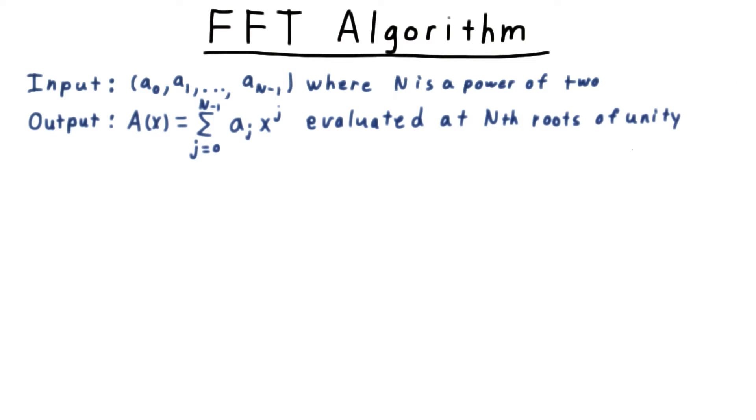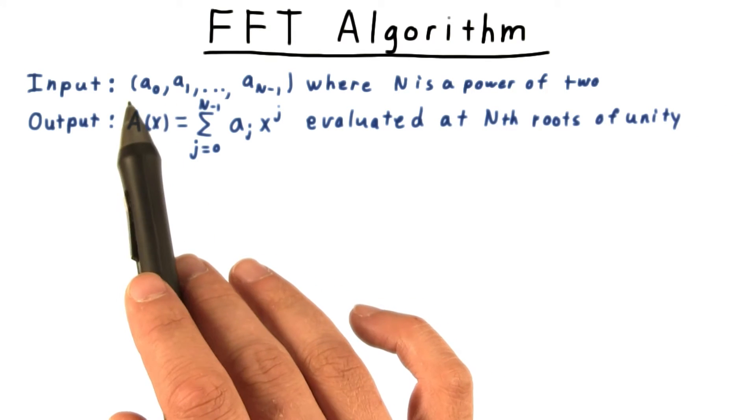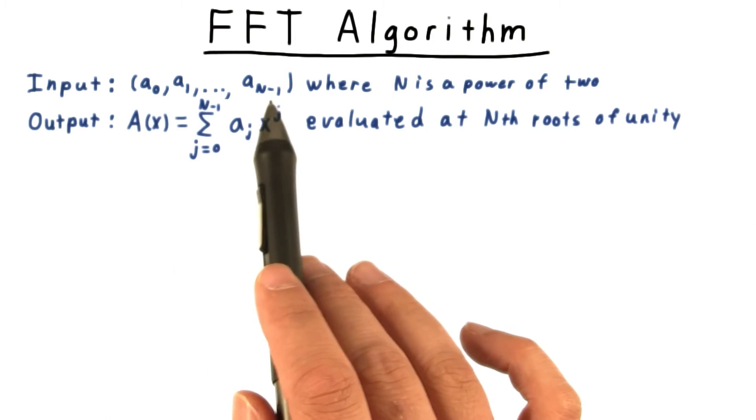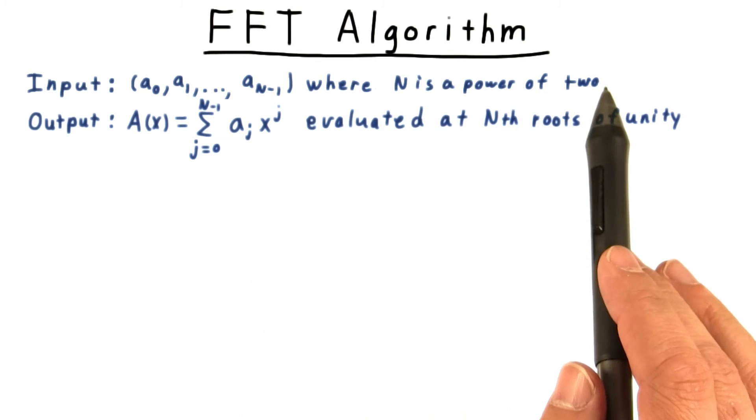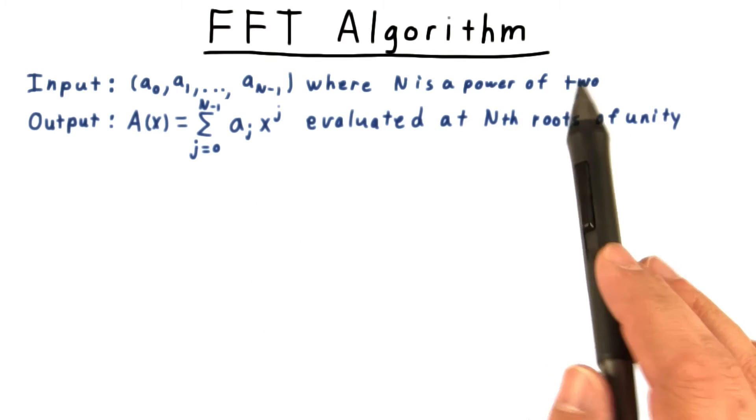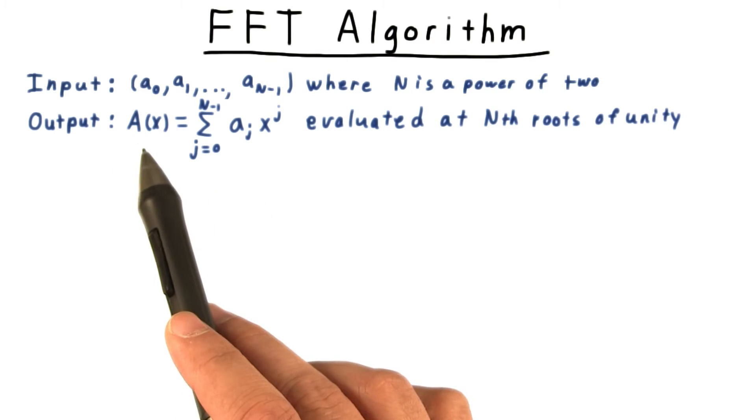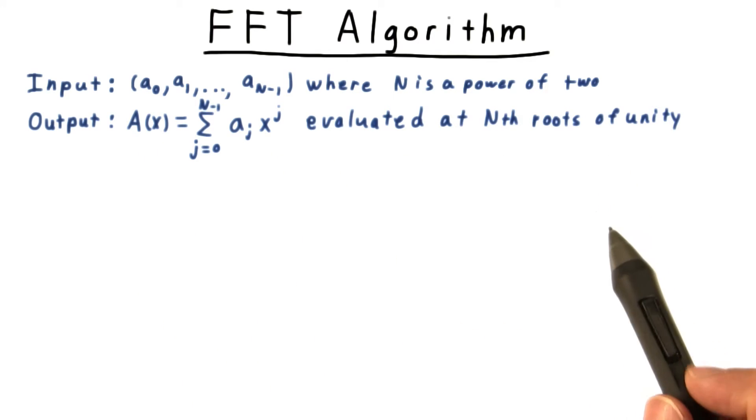Having seen an example for n equals 4, now let's state the fast Fourier transform precisely for the general case. As input, we have a sequence of numbers a0 through an minus 1, where n is a power of 2. And we want to return the values of the corresponding polynomial at the nth roots of unity.